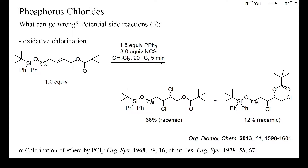If an excess of a reactive chlorinating agent is used, the starting alcohol may be either chlorinated or oxidized to an aldehyde or ketone. N-chlorosuccinimide readily chlorinates alkenes, and less NCS than phosphine should have been used to prevent this side reaction. Such chlorinations can also be prevented by using carbon tetrachloride as the electrophilic chlorinating reagent.